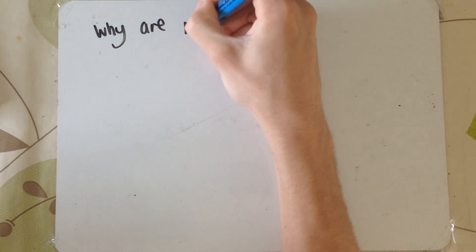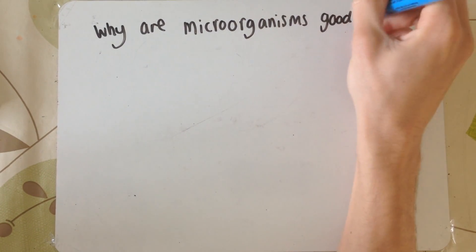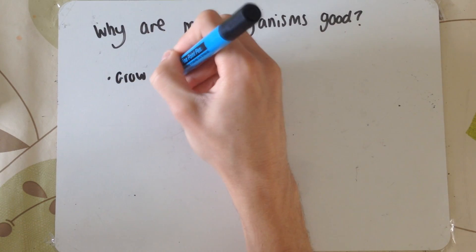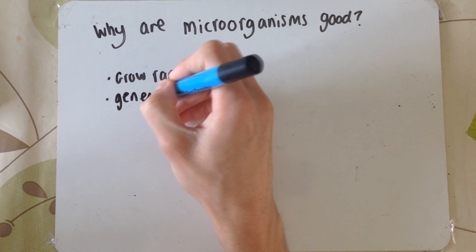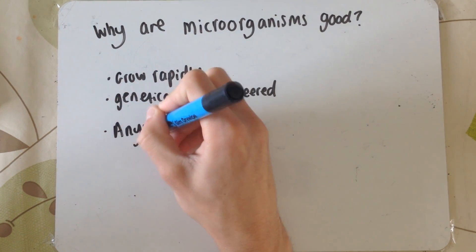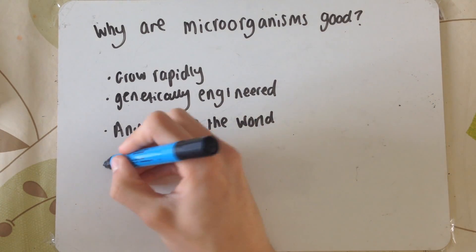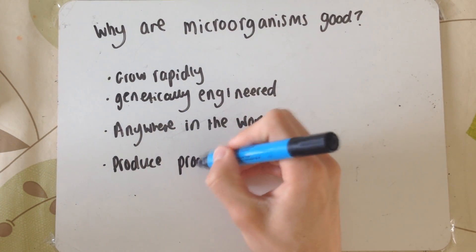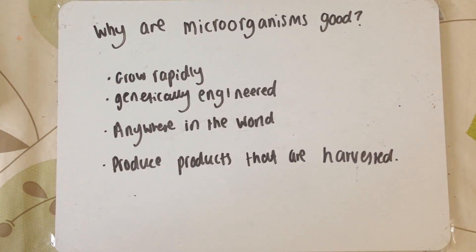So why are microorganisms so good and so useful? There are several factors. First, they grow rapidly — if you give them favourable conditions such as the best temperature and moisture, they can grow and reproduce quickly. They can also be genetically engineered to produce useful by-products. They can be grown anywhere in the world; it doesn't matter on climate or where you're from — if you can replicate the right lab conditions, you can grow them. And microorganisms, genetically engineered or not, can produce by-products that can be harvested and are useful to us.